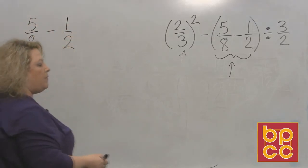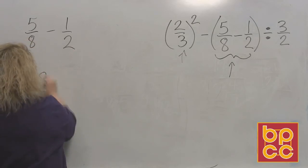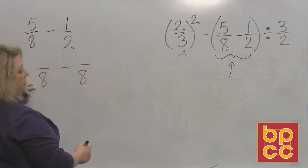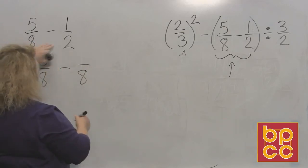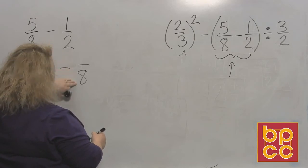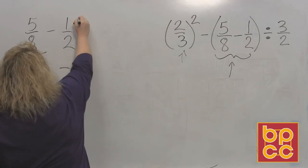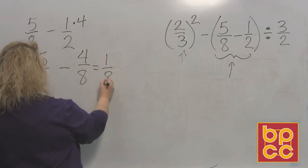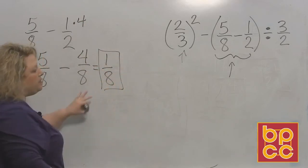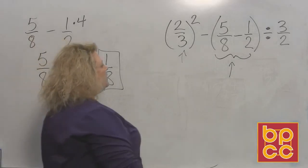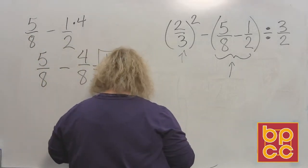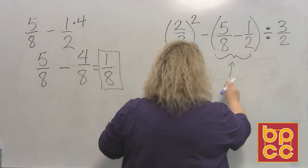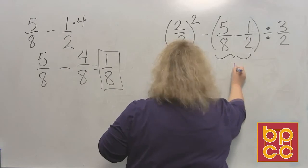I have five-eighths minus one-half. So what's the common denominator between these two? 8. The first fraction, I didn't change the bottom, so I don't change the top. The second fraction, I went from 2 to 8 by multiplying by 4, so I do the top times 4. And then you write the bottom, collect the top. I can't reduce that, so I'm going to leave it the way it is.